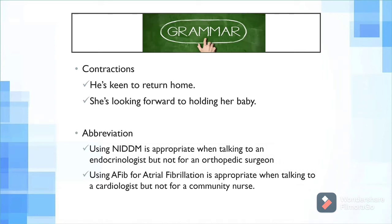Proper grammar also makes your letter more formal. There are two things to avoid: contractions and abbreviations. Contractions use an apostrophe — for example, don't write 'he's keen to return home'; write 'he is keen to return home.' These are small things that can make a very big impact in your letter. Do not use contractions. Write complete sentences: 'she is looking forward to holding her baby.'